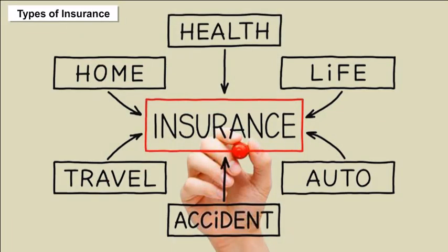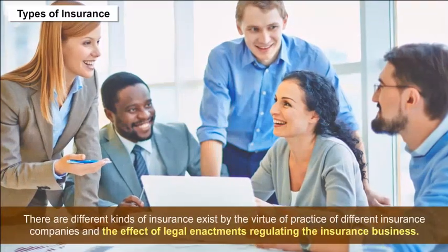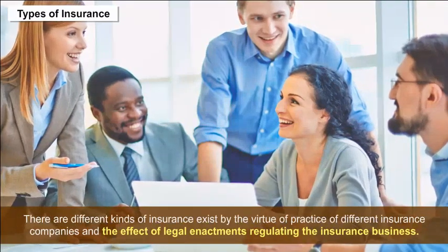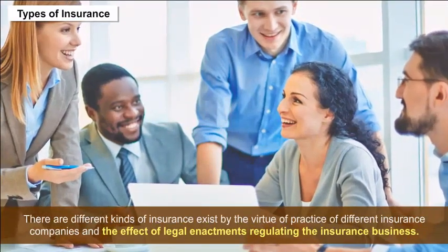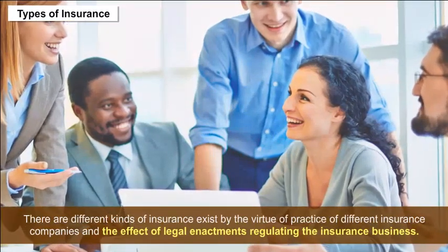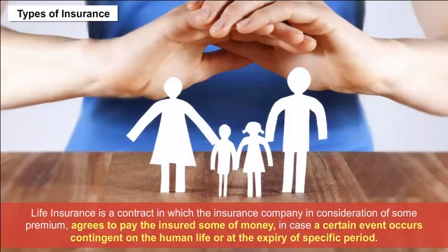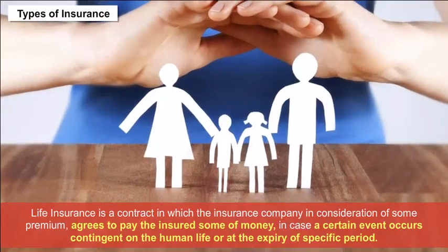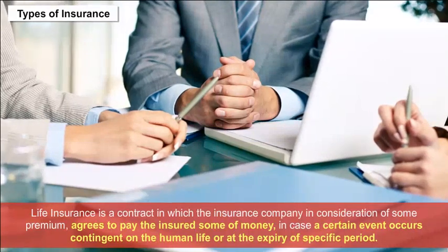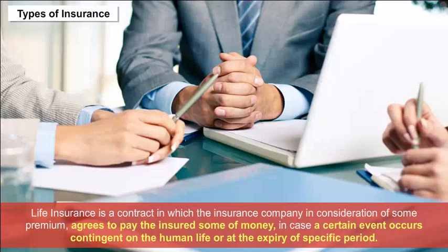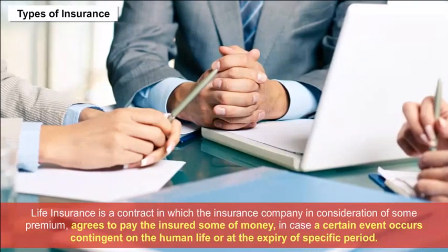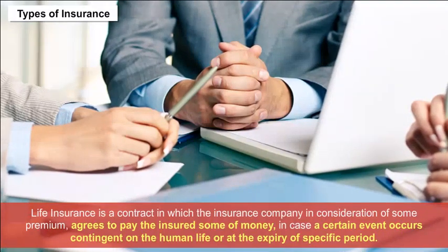Types of Insurance: Different kinds of insurance exist by virtue of practice of different insurance companies and the effect of legal enactments. Life insurance is a contract in which the insurance company, in consideration of some premium, agrees to pay the insured a sum of money in case a certain event occurs contingent on human life or at the expiry of a specific period.